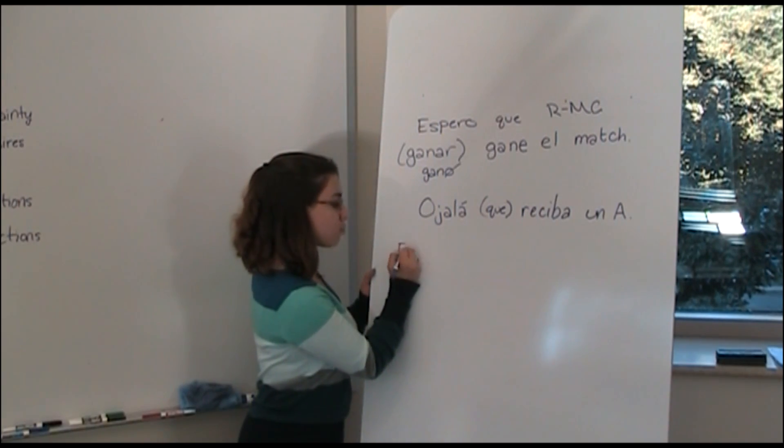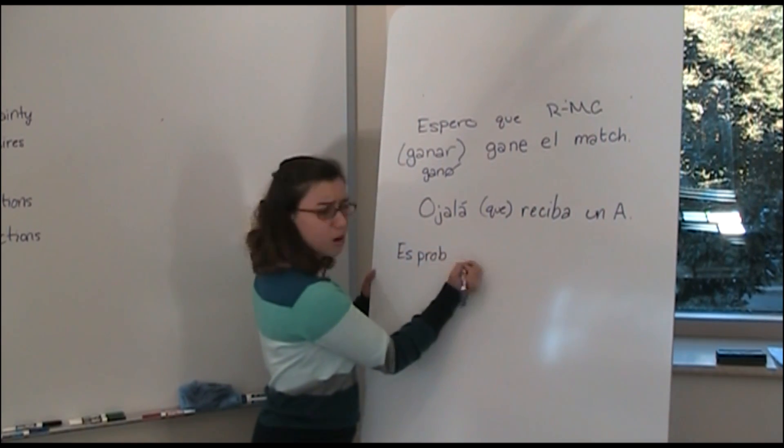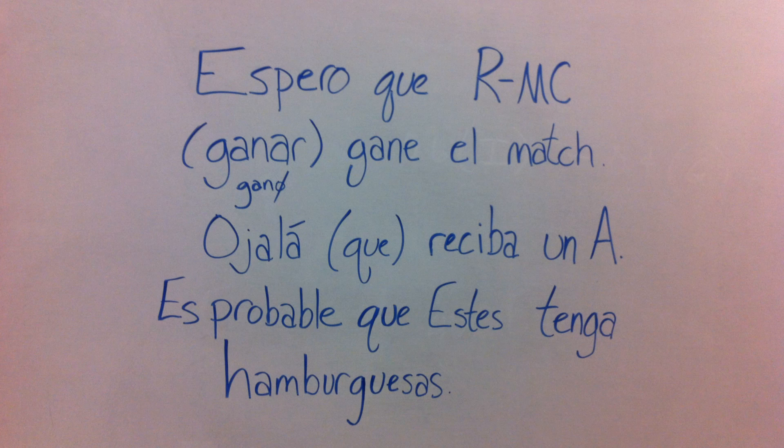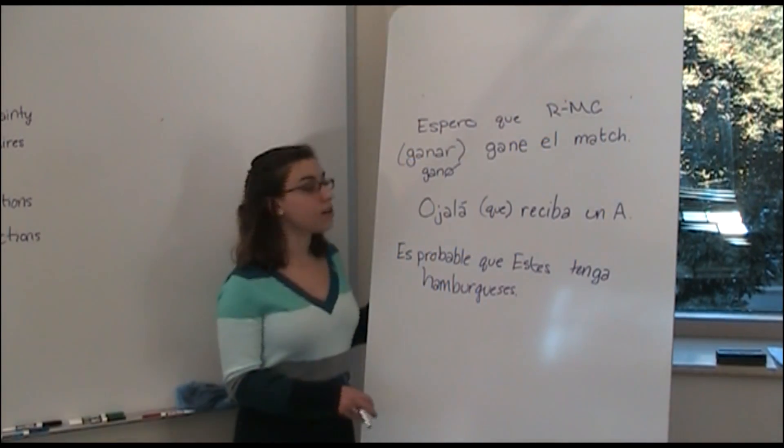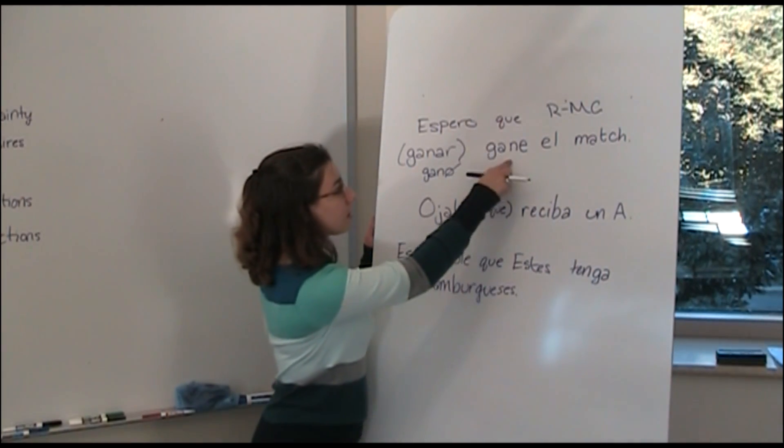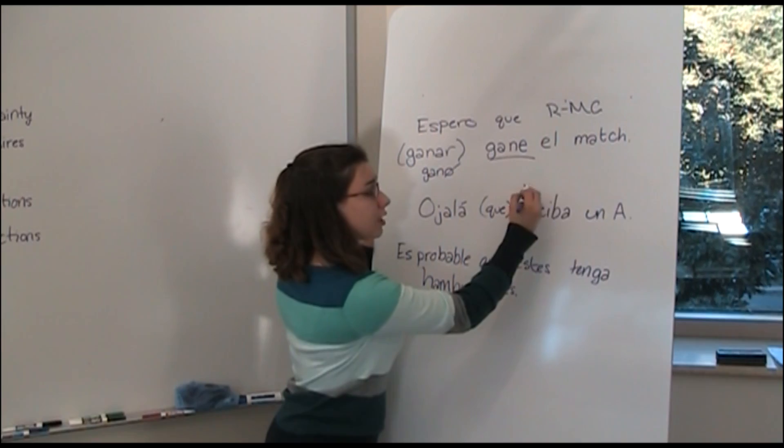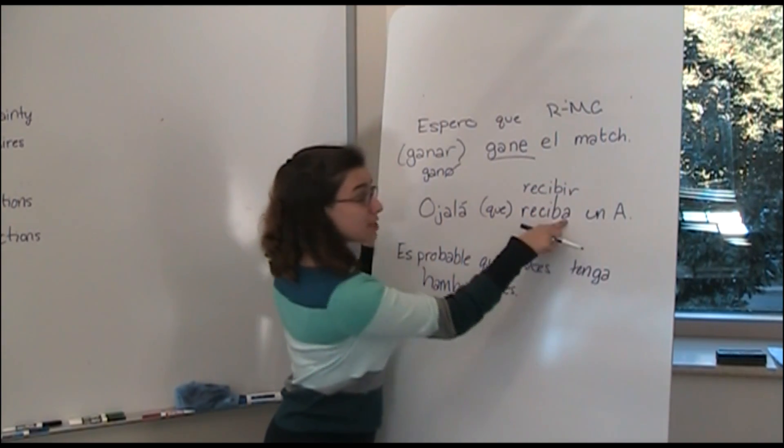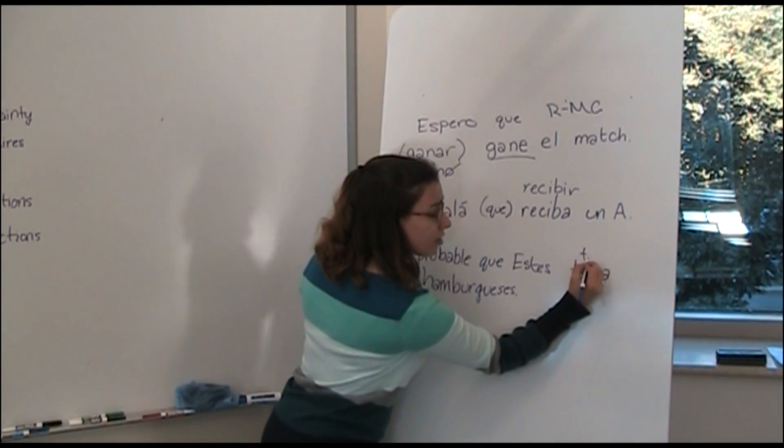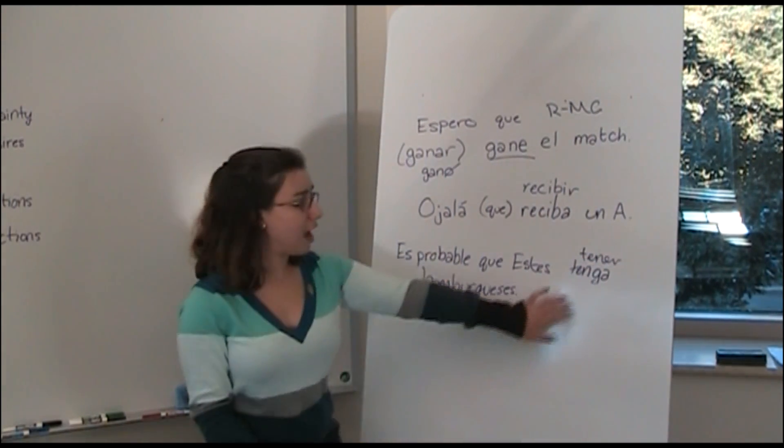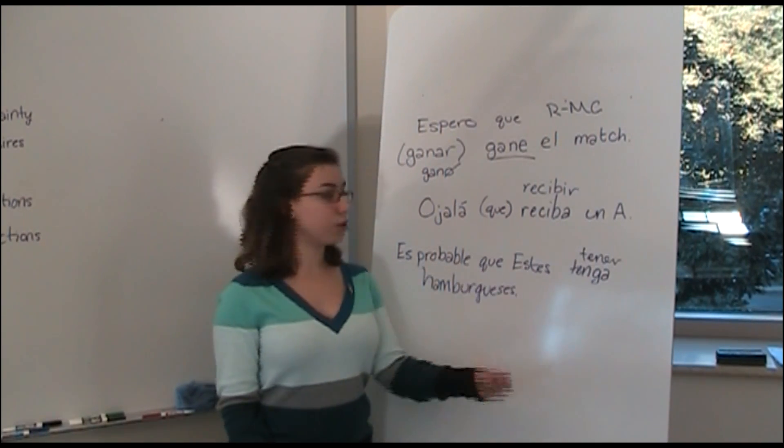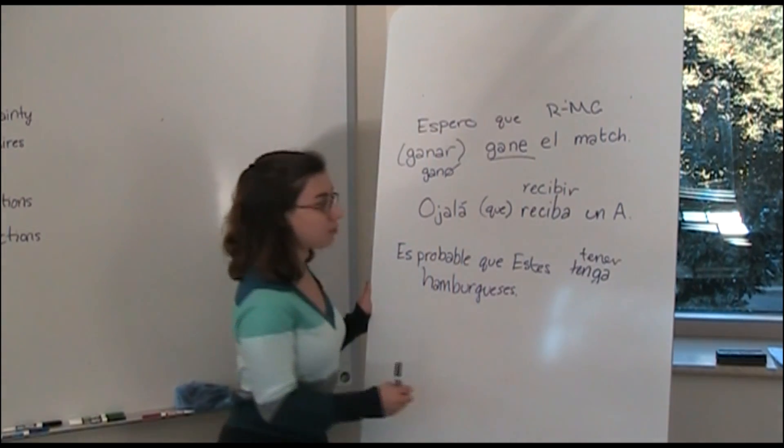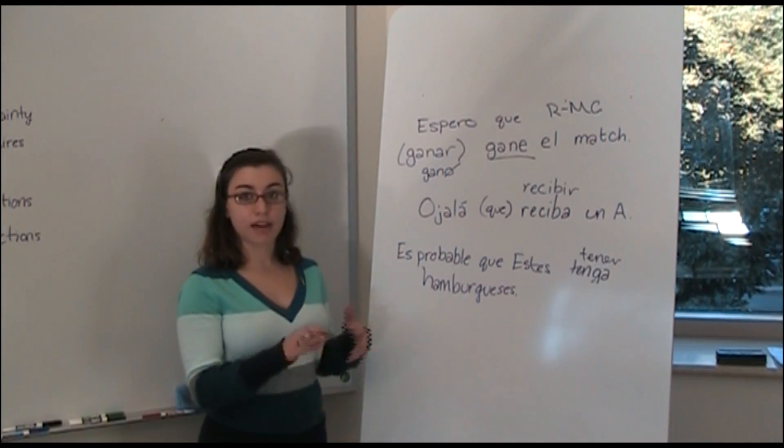We could also say something like es probable que, a hypothetical situation, a probability, que Stis tenga hamburguesas. So it's probable that Stis will have hamburgers. So to summarize, we've conjugated ganar to gane, we've conjugated recibir to reciba, and we've conjugated tener to tenga. And as you can see, this uses what I said earlier with retaining the irregular yo form where the g is added into the verb. And we've just added the ending to the end of that yo form.